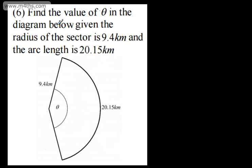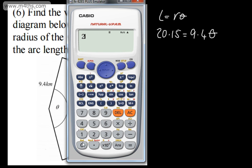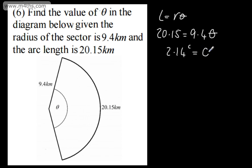Question 6 asks us to find the value of theta, given a sector with radius 9.4 kilometres and arc length 20.15 kilometres. Working backwards with L = Rθ: 20.15 equals 9.4 times theta. Dividing 20.15 by 9.4 gives 2.14 radians to three significant figures.